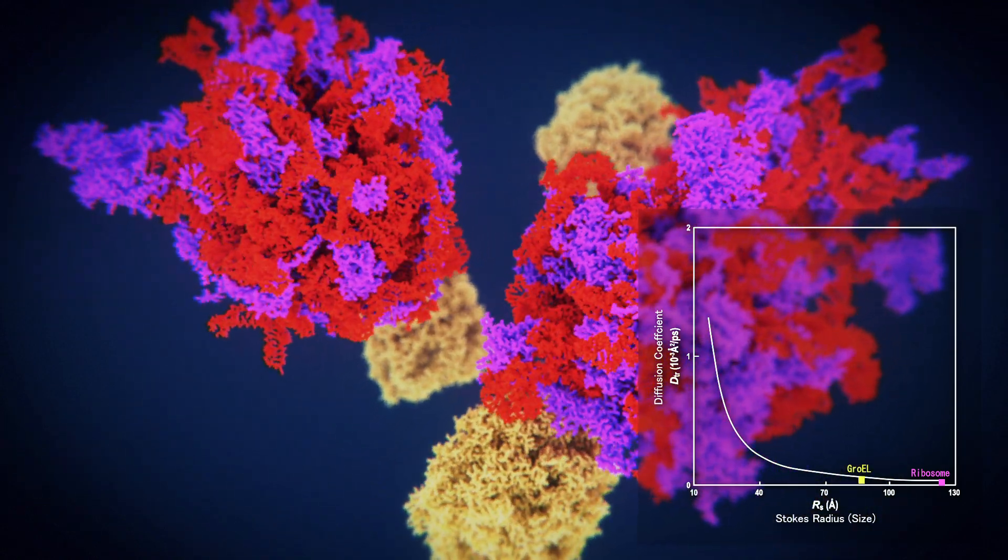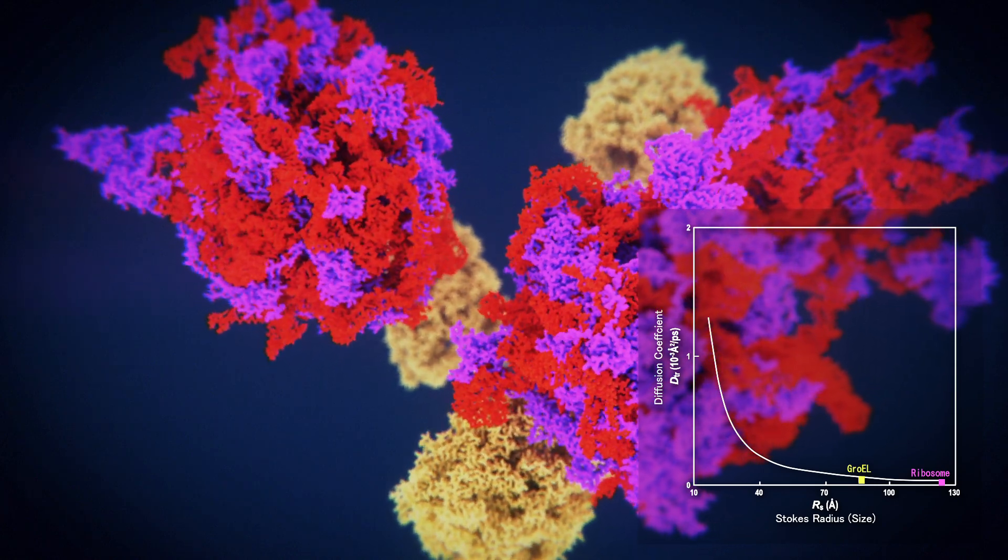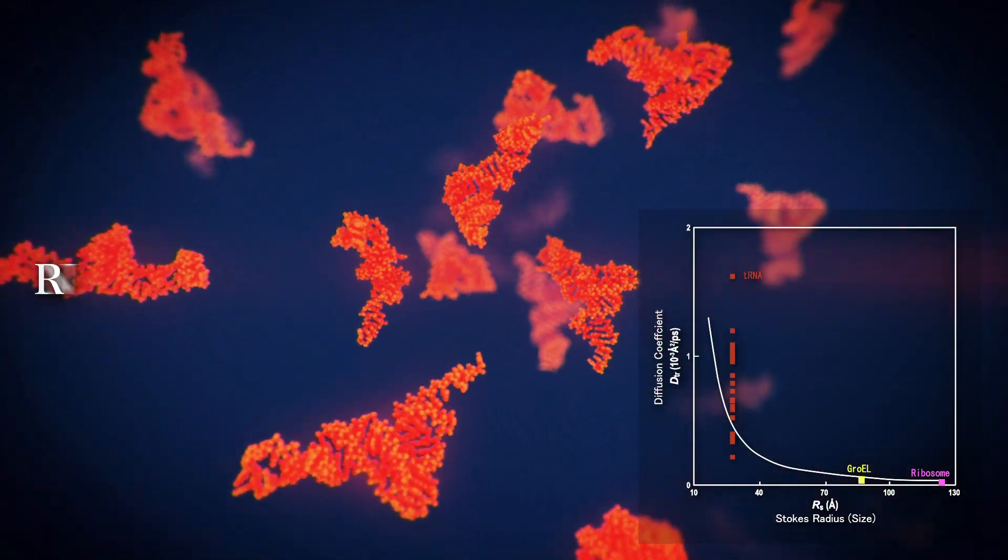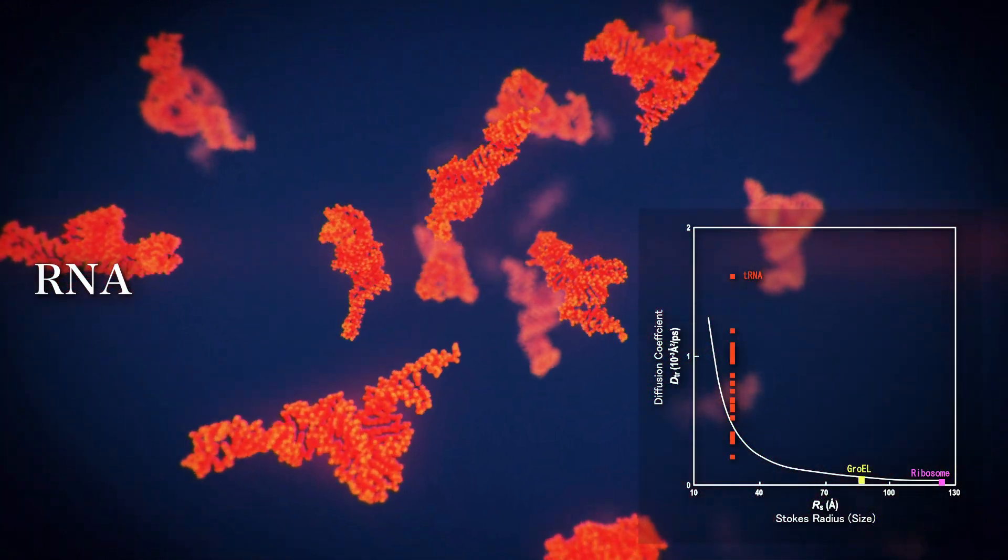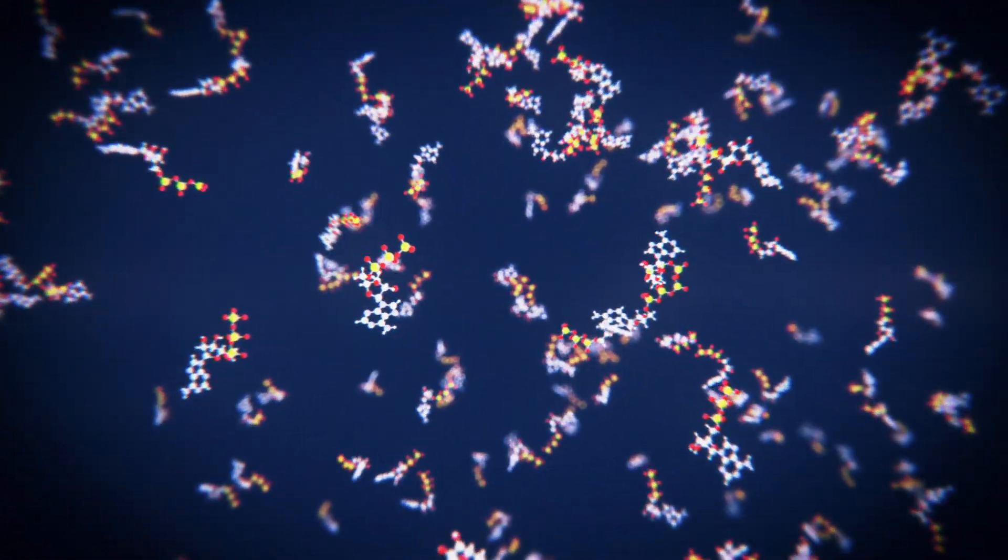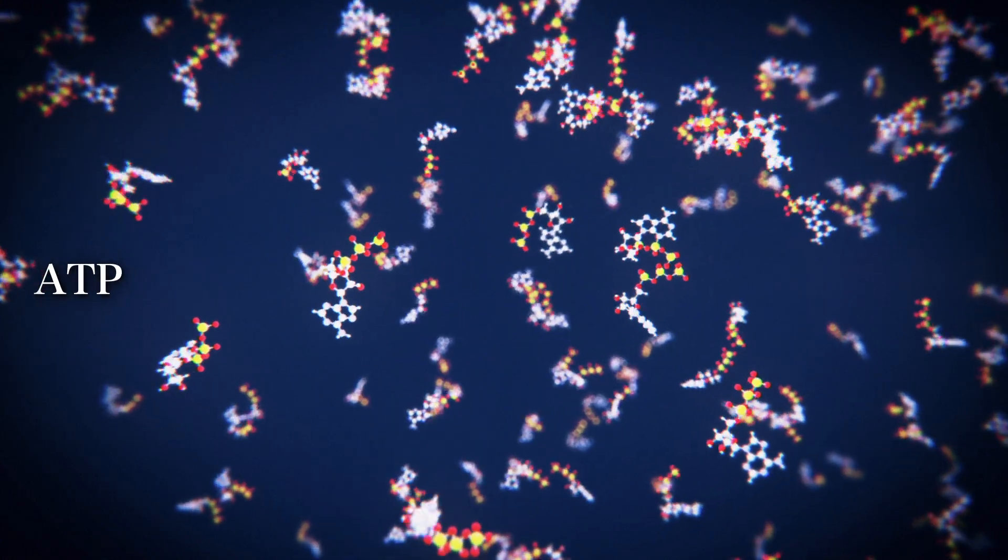Giant complexes such as these hardly move at all under the conditions of the simulation. Smaller proteins and small RNA fragments, however, move more actively, despite the crowded environment. And smaller metabolites, like ATP, move faster still.